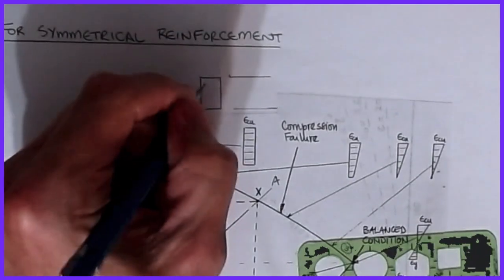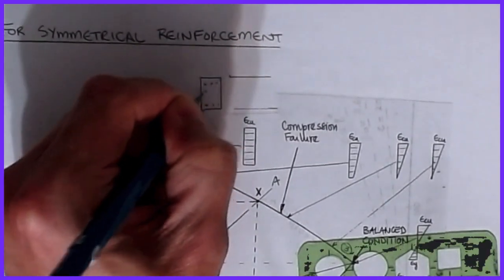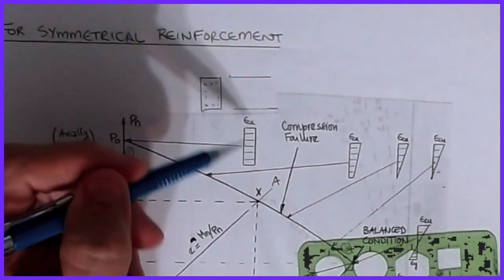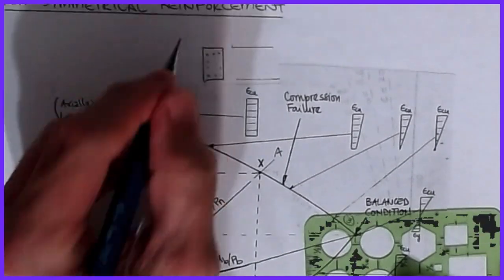For our columns, columns typically have steel on at least two faces and sometimes more depending on how it lines up. This picture still represents the same scenario. What happens is that the load when it's pushing in a pure axial case is located concentrically at the middle.